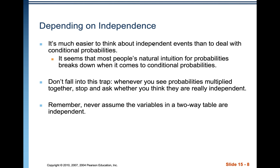It's much easier to think about independent events than to deal with conditional probabilities. Most people's natural intuition for probabilities breaks down when it comes to conditional probabilities, so we really have to work on developing concepts that may be contrary to natural tendencies. Whenever you see probabilities multiplied together, stop and ask whether they are really independent, and remember never to assume variables in a two-way table are independent.